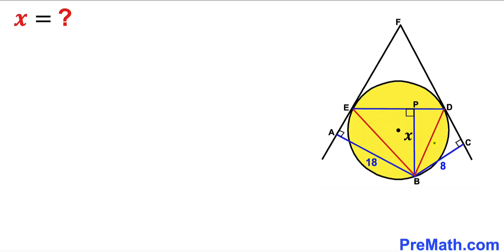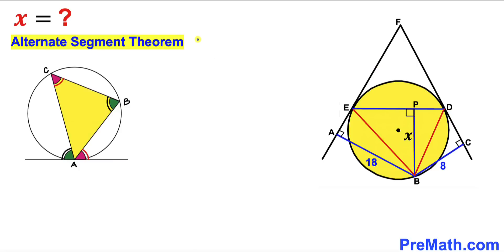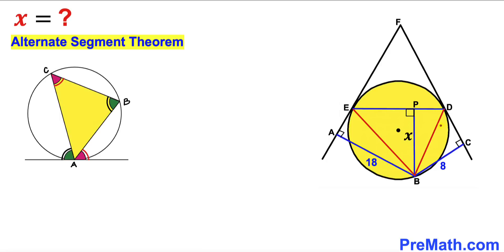I have connected these points. Now let's recall the alternate segment theorem. According to this theorem, if we have triangle ABC fully inscribed in a circle with a tangent at point A as the tangency point, then this angle has got to be equal to this angle inside the triangle, and likewise this other angle equals this angle inside the triangle. In our case, if I call this angle alpha, then this angle inside triangle EBD is going to be alpha as well.